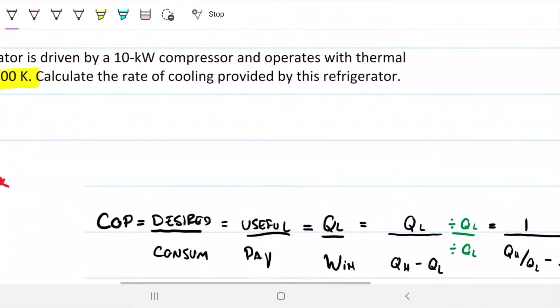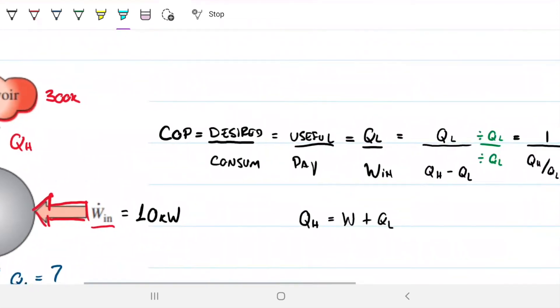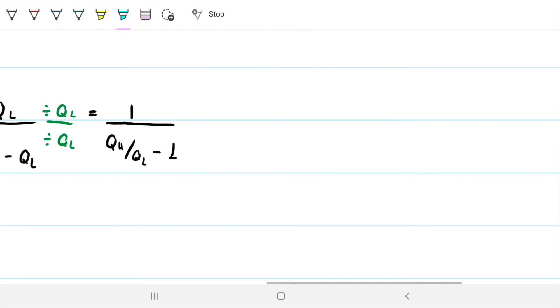And because this is a reversible, completely reversible refrigerator, and only because of this, we can also substitute. There's an equivalence between the high heat and the low heat, and the limiting temperatures on the reservoirs.